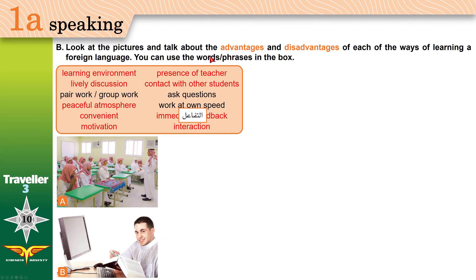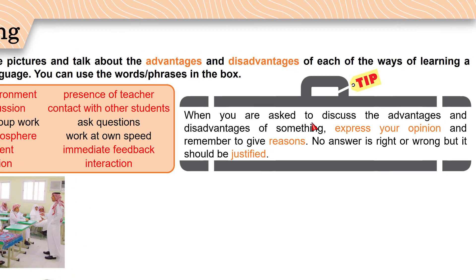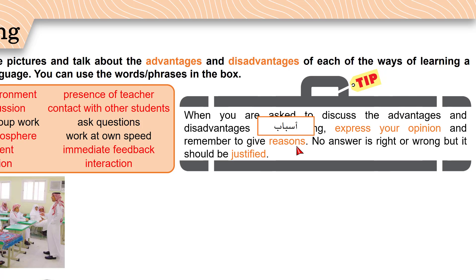Before we discuss advantages and disadvantages, remember: when you are asked to discuss them, express your opinion — say what you think — and give reasons. Why is this your opinion? Why do you think this is better? No answer is right or wrong. Your opinion can never be right or wrong, but it should be justified — you should give reasons why you think this way, and sometimes you can even give examples.